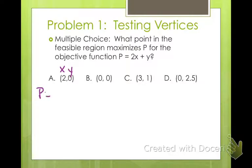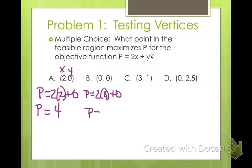Now, so this one, P equals 2 times 2 plus 0. 2 times 2 is 4. So if we use the point (2, 0), that's one of the vertices of our feasible region, we get 4. If we plug in (0, 0), 2 times 0 plus 0, P is 0.